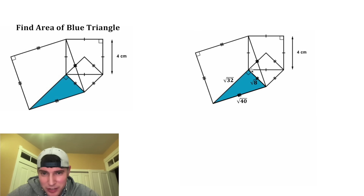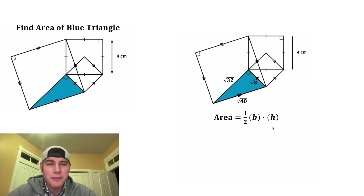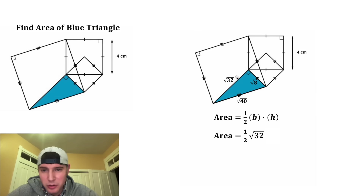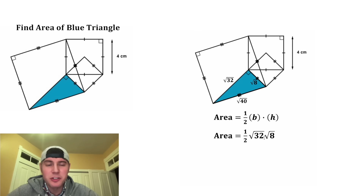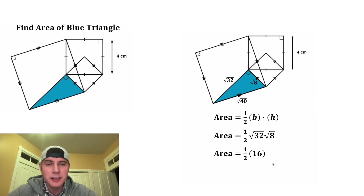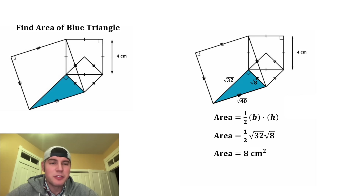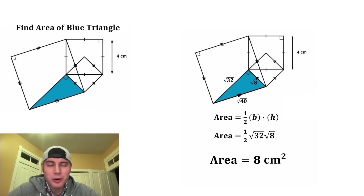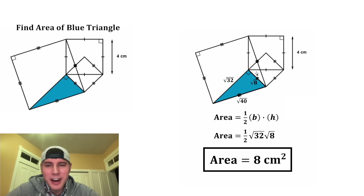Now since we have these two sides, we're ready to find the area of this triangle. The area equals one half base times height, where the base is square root of 32 and the height is square root of eight. Combining square root of 32 and square root of eight gives us square root of 256. The square root of 256 is 16, and one half of 16 is eight. So the area of this blue triangle is eight centimeters squared. How exciting!